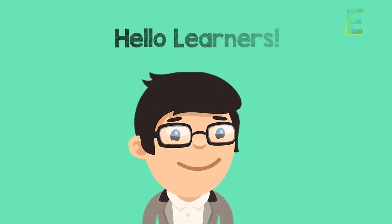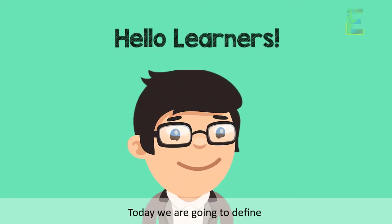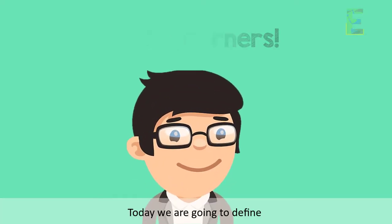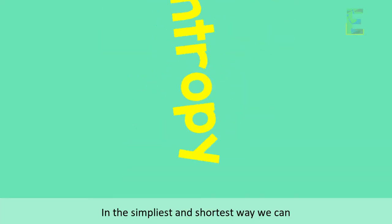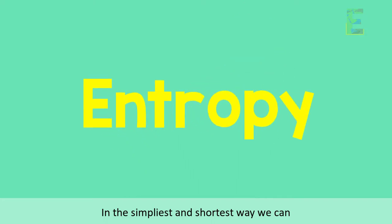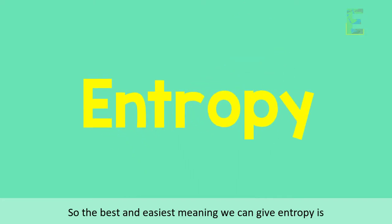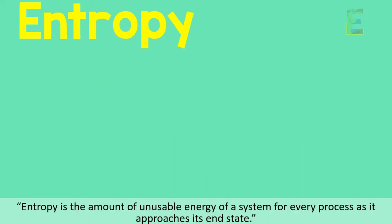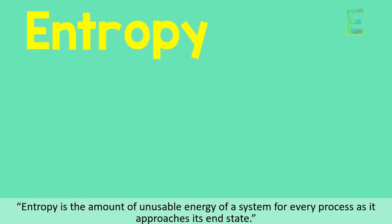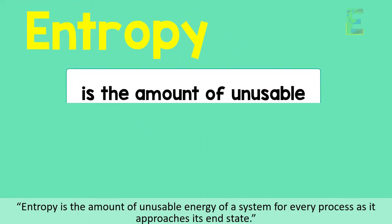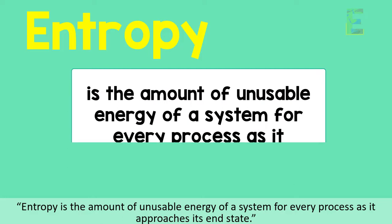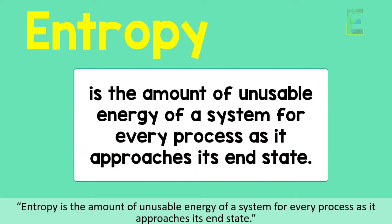Good day learners! Today we are going to define entropy in the simplest and shortest way we can. The best and easiest meaning we can give entropy is: entropy is the amount of unusable energy of a system.